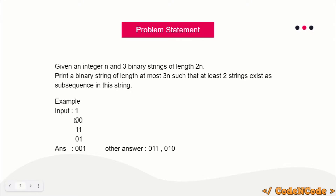For example, if n equals one, there are three input strings of length 2n. You print a string of length at most three, and at least two of them must appear as subsequence in it. You can see two strings appearing as subsequences in the output. There can be multiple answers — we just have to print any one. For example, zero one zero also works where the first and third strings exist as subsequences.